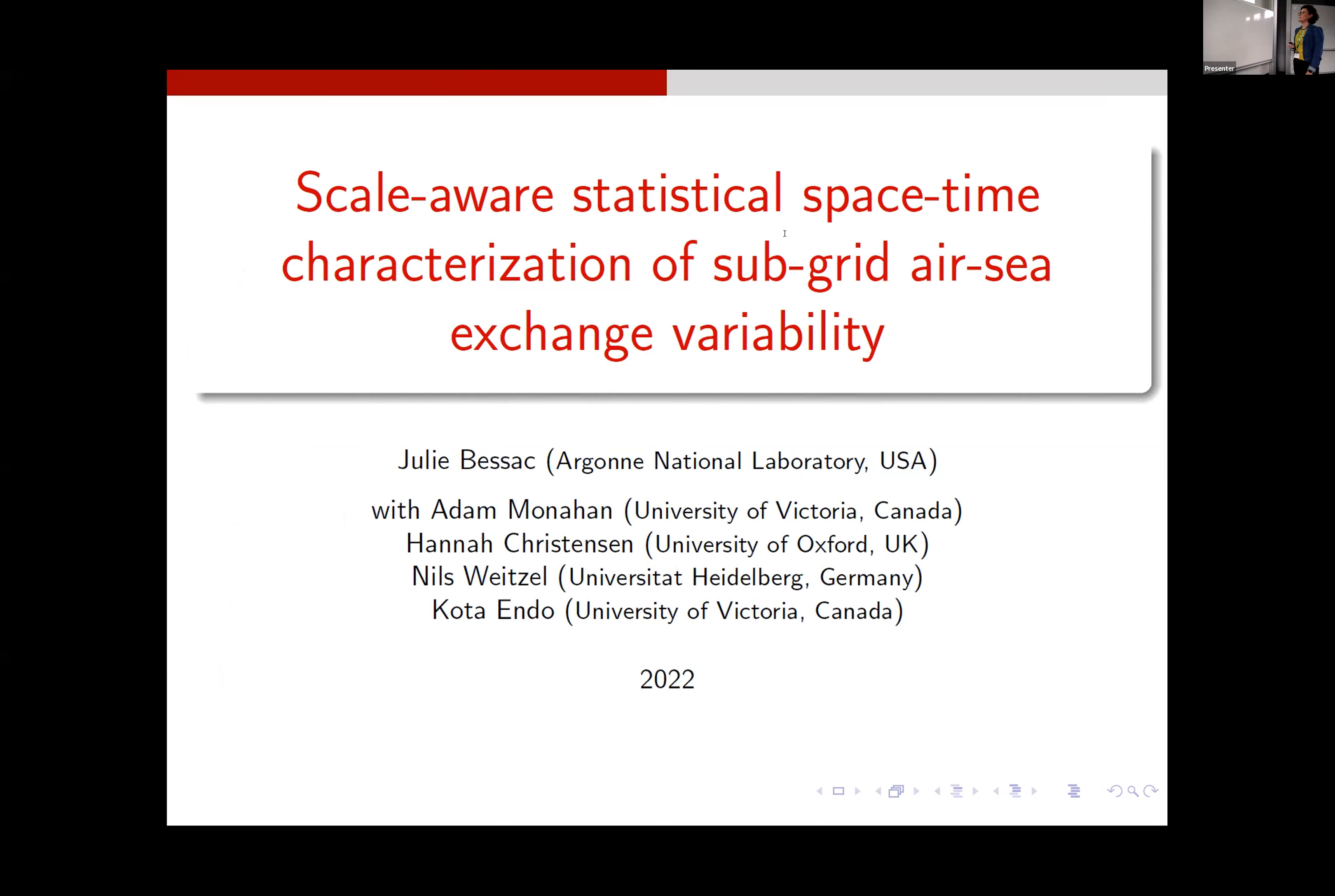So this is a project that we started a few years ago, actually, with Adam Monahan, Anna Christensen, Nils Beitzel, and then later on, Kota Endo joined us as a student, and we had quite some nice time working together. And so the idea here was to work on the subgrid scale variability of wind fields and try to build stochastic and statistical models to capture that, and in particular, capturing that in space and time.